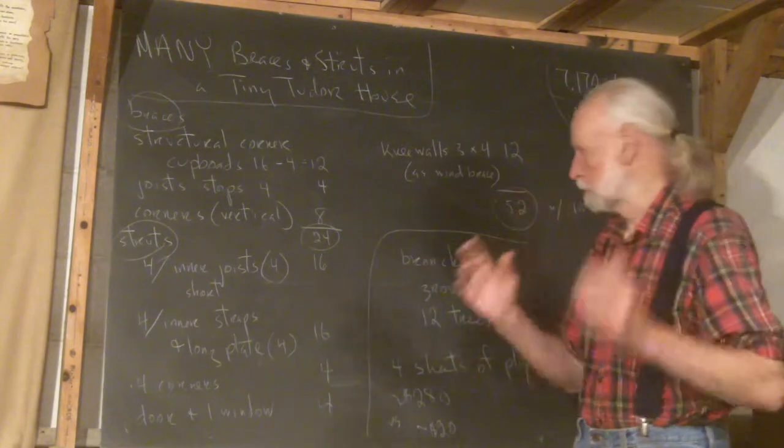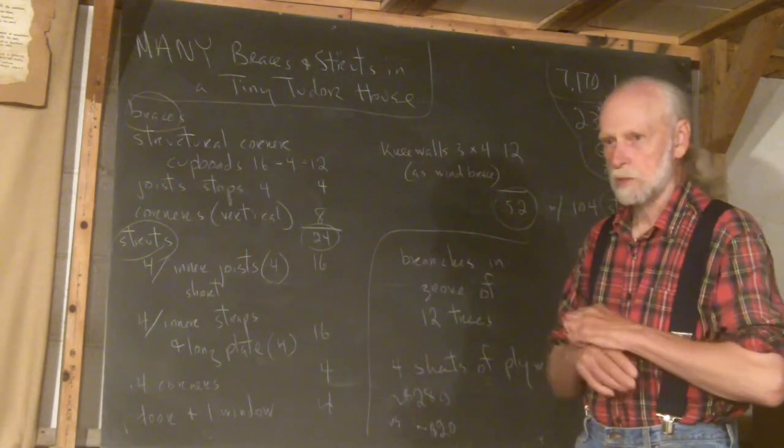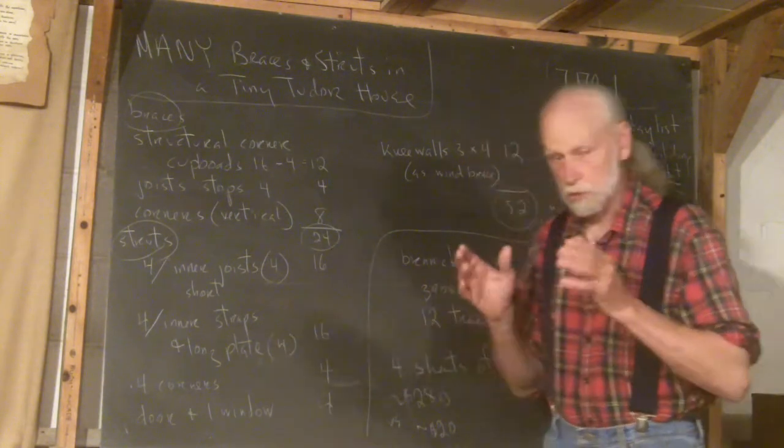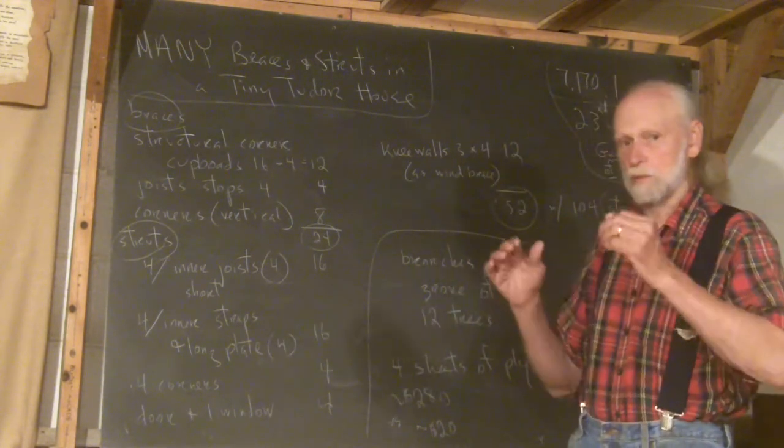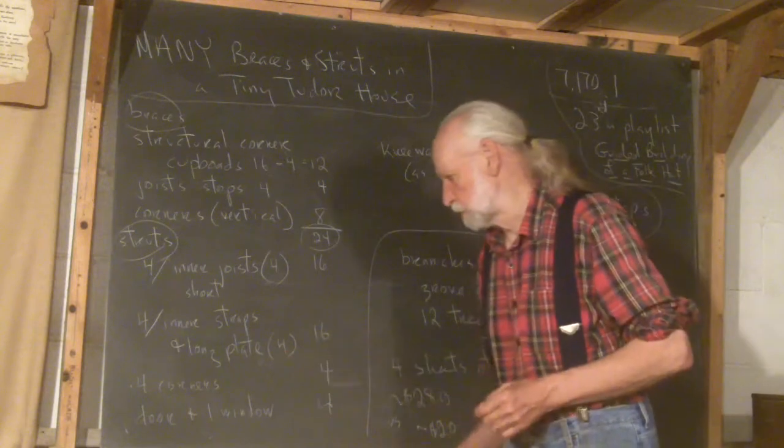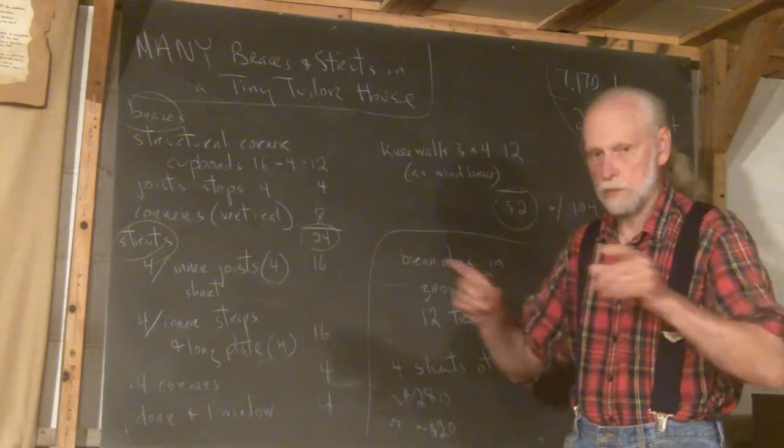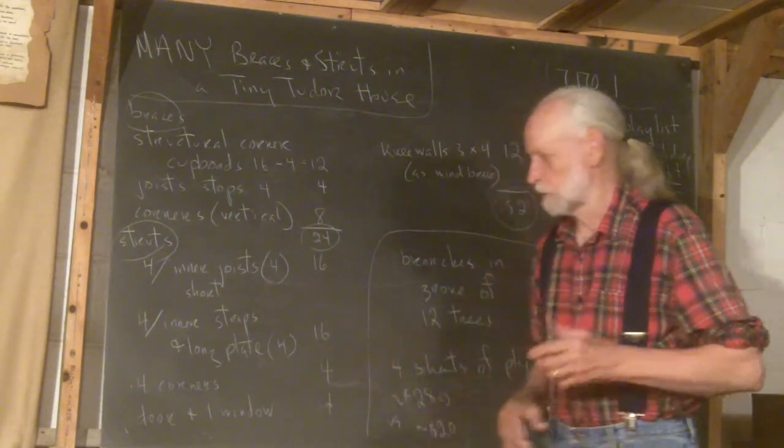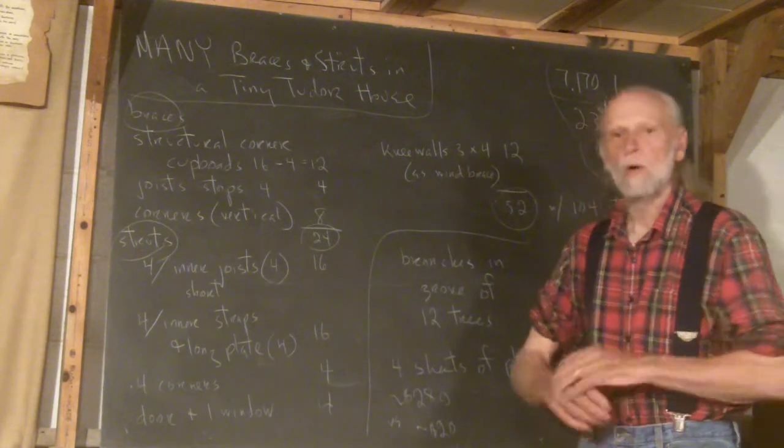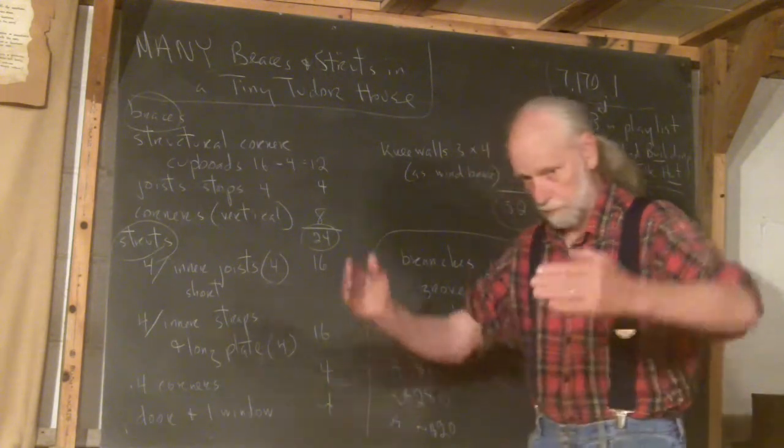Now the struts, there are so many. The inner joists, the six joists that go along in the inside, each one of them will have four struts supporting them. That makes 16. The inner straps, what I'm calling them, the subjoist straps, along the long way of the building, each one of them will have four - two on the inside and two on the outside of the building. Each one of them will have four. That's 16.